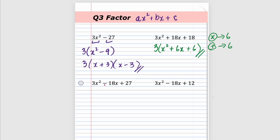Next one: take out a three and you're left with x² plus 6x plus six. Is this trinomial factorable? Can you find two numbers that multiply to six and add up to six? No — that can never happen, so we just stop there. Just by changing a few things — making it negative and using 27 instead — results in a different answer. Take out a common three, giving x² minus 6x plus nine. That's a perfect square trinomial: x minus three squared. Square root of nine is three, and double it makes the negative six.